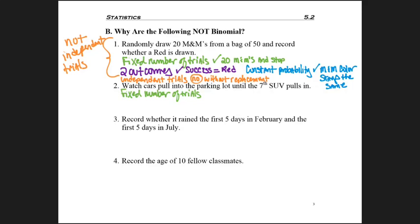We're watching cars pull into a parking lot until we record the seventh car that pulls in as an SUV. Is that a fixed number of trials? No. It's unknown how many cars we're going to have to watch pull into the parking lot until we hit that seventh SUV. We could be there all day, all month, or two minutes. We don't have a point where we say stop.